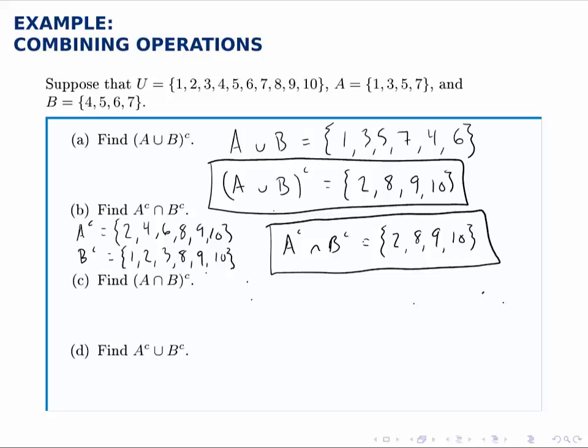Notice something interesting. We got the same result as we did for the first one. This is not a coincidence. Anytime you have two sets, if you take the complement of their union, like in part A, or you take the intersection of their complements, you're going to get the same thing every time. This is an example of one of DeMorgan's laws for sets.